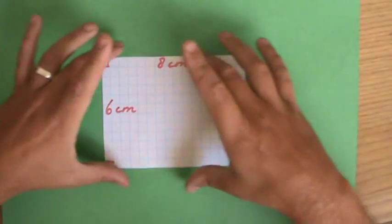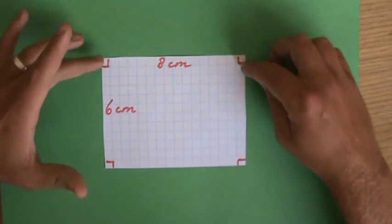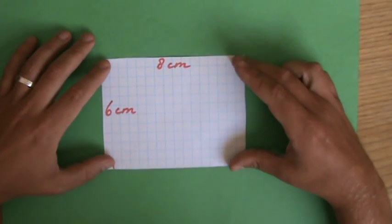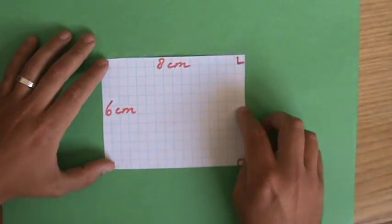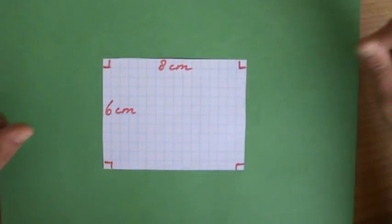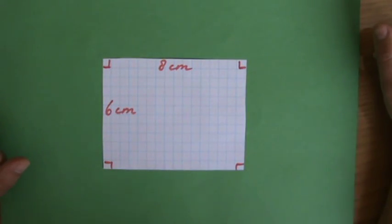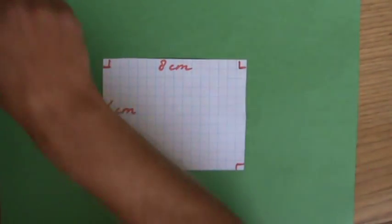What kind of figure do I have here? Well, I have four angles, 90 degrees, four right angles. Six centimeters, opposite sides are equal, six centimeters, eight and eight. This indeed is a rectangle. Now what will be the area of this rectangle?